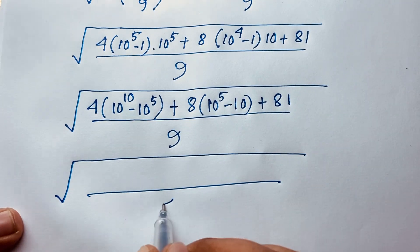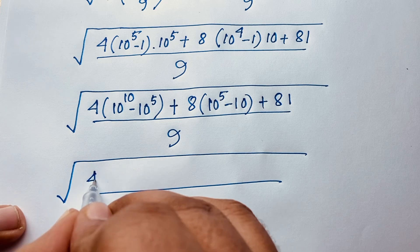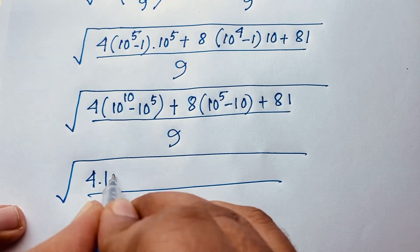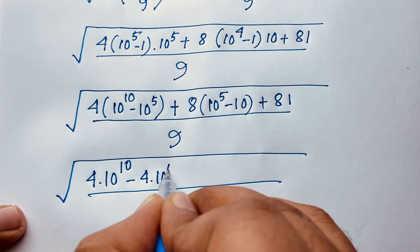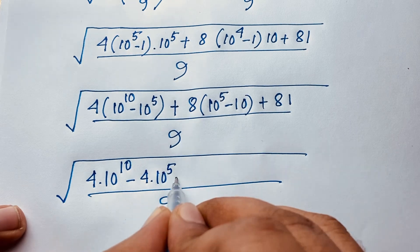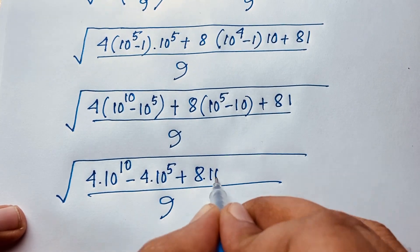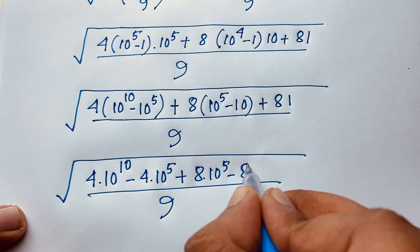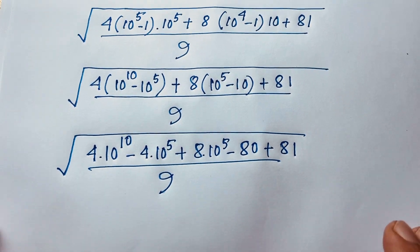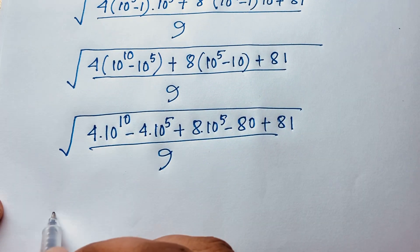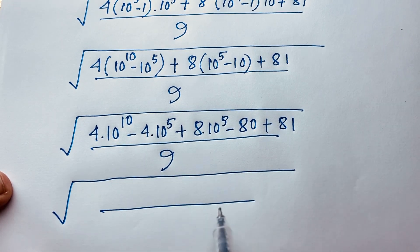Now here square root and it will be 9. Then this times this is equal to what — so you can see it will be 4 times 10 to the power 10, minus 4 times 10 to the power 5, plus 8 times 10 to the power 5, minus 80, plus 81. Now it is easily here square root, then it will be 9.